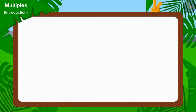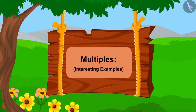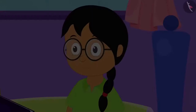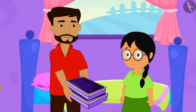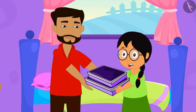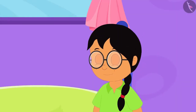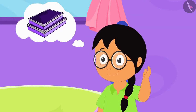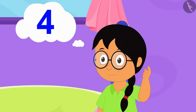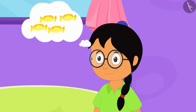Hello children, in the last video we learned about multiples. In this video, we will learn more about it through some interesting examples. Today, Meenu's uncle has come from abroad. He has brought various toffees for Meenu and her friends. Meenu is thinking that she will divide those toffees using groups of 3, 4, 5 or 7 in such a way that no toffee is left.